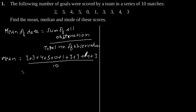Sum of these numbers is equal to 28 divided by 10, which gives 2.8 goals. So, the mean of this score is 2.8 goals.